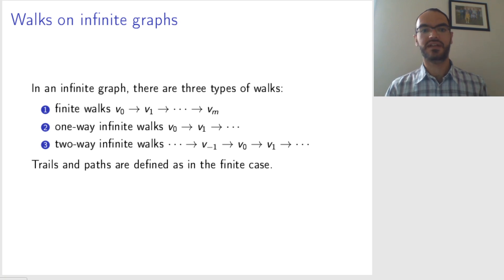And you can define trails and paths and so on as in the finite case. It doesn't matter so much. So remember, trail means that edges don't repeat. Paths mean that neither edges nor vertices do repeat.